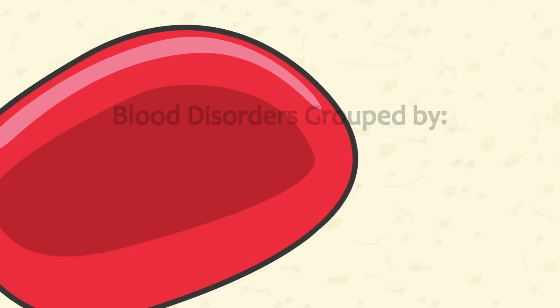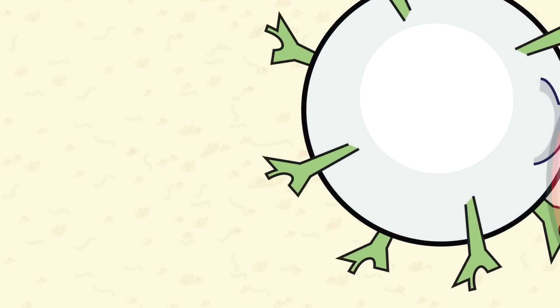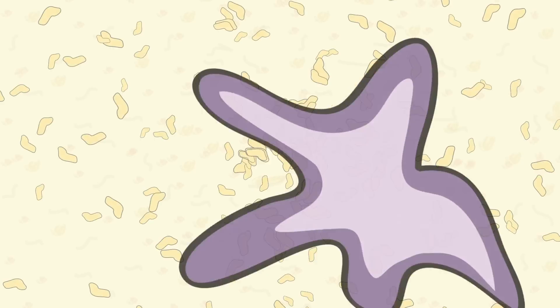Blood disorders are grouped according to which part of the blood they involve: red cells, white cells, platelets, or plasma.